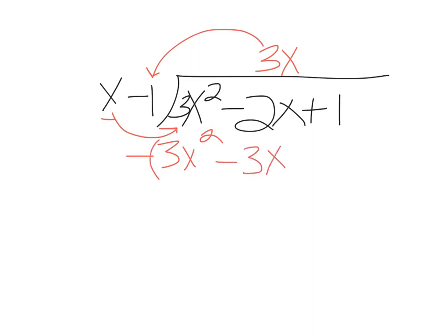And we subtract all that. So what happens is you have negative 2 minus a negative 3. So it becomes negative 2 plus 3, so you just get an x there. And of course, 3x squared minus 3x squared is just 0. Bring down the plus 1.